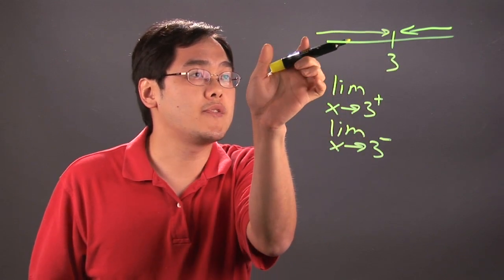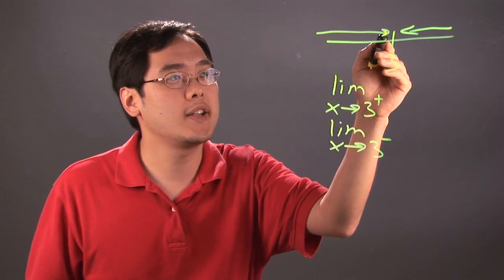So what that means is numbers to the left of 3 are 1, 2, 2.9, 2.99, and so on.